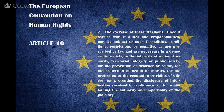But Article 10 does not end here. It goes on to state under Paragraph 2: the exercise of this freedom, since it carries with it duties and responsibilities, may be subject to such formalities, conditions, restrictions, or penalties as are prescribed by law, necessary in a democratic society, in the interest of national security, territorial integrity, or public safety, for the prevention of disorder or crime, for the protection of health or morals, for the protection of the reputation or rights of others, for preventing the disclosure of information received in confidence, or for maintaining the authority and impartiality of the judiciary.